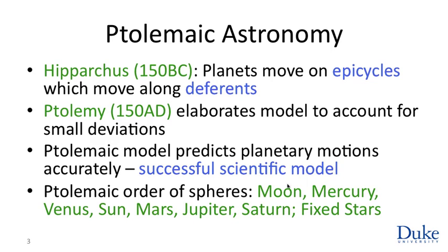The Moon is on the innermost sphere, then Mercury, Venus, the Sun, Mars, Jupiter, Saturn, and then outside — the celestial sphere of the fixed stars.